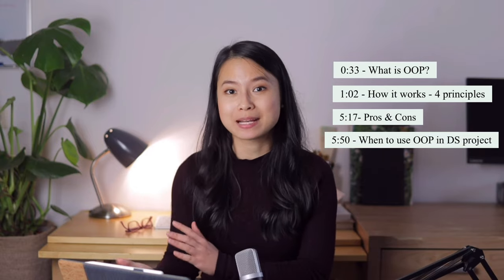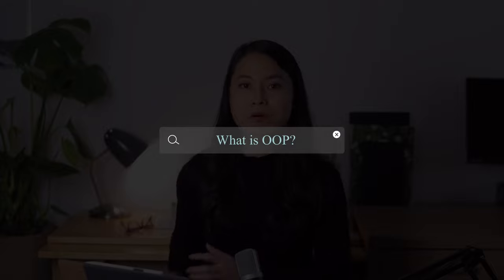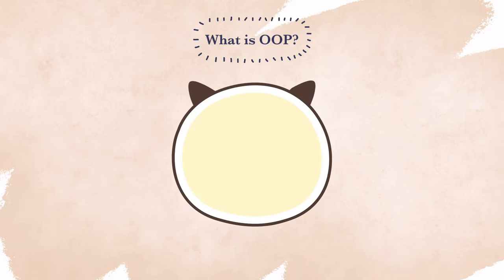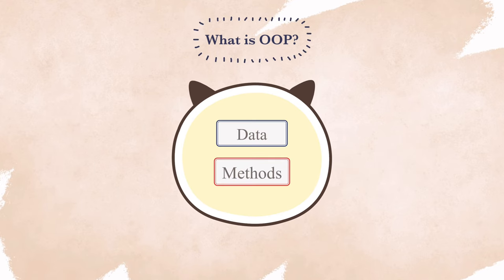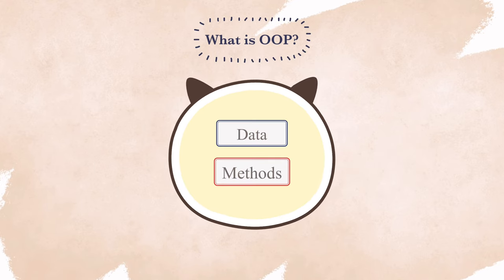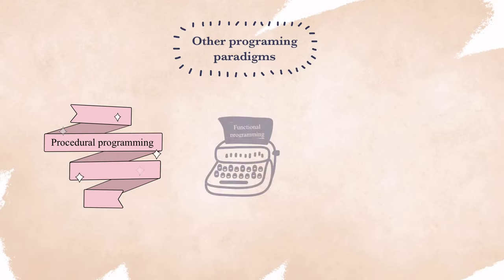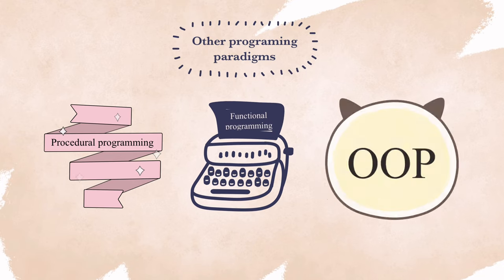First of all, what is object-oriented programming (OOP)? It is a programming paradigm that organizes programs as objects—data structures consisting of data fields and methods together with their interactions. It is just one of the programming paradigms implemented in popular programming languages nowadays. Other programming paradigms include procedural programming and functional programming, together with OOP.